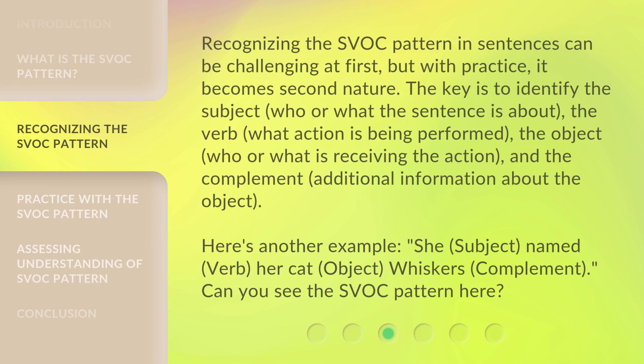Recognizing the SVOC pattern in sentences can be challenging at first, but with practice, it becomes second nature. The key is to identify: the subject — who or what the sentence is about; the verb — what action is being performed; the object — who or what is receiving the action; and the complement — additional information about the object.